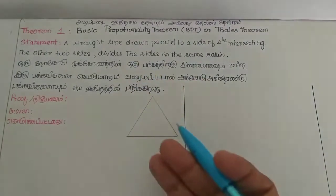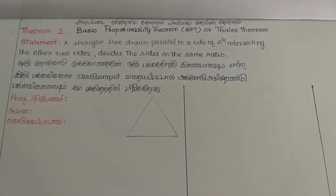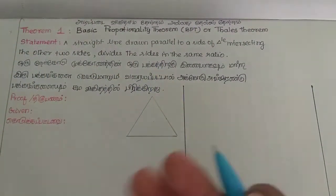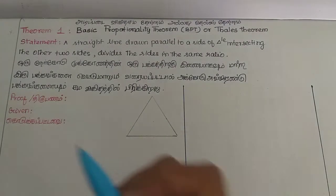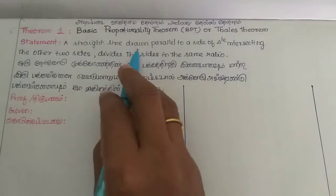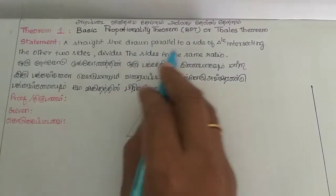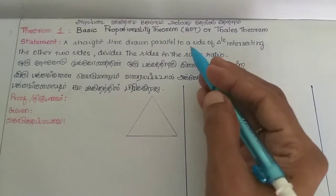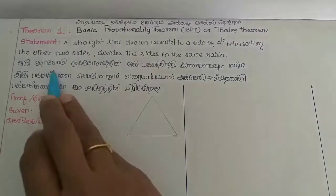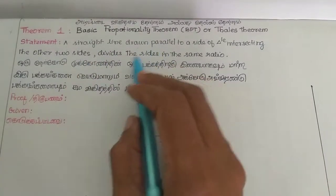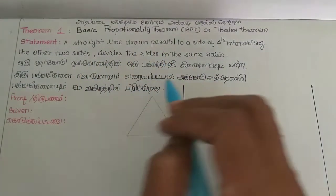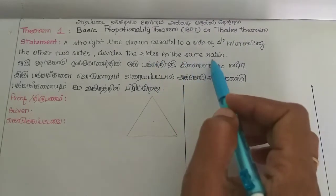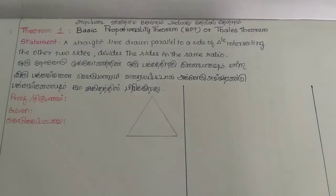Let's look at the statement of the theorem. A straight line drawn parallel to a side of a triangle, intersecting the other two sides, divides those two sides in the same ratio — that is, equal ratios.